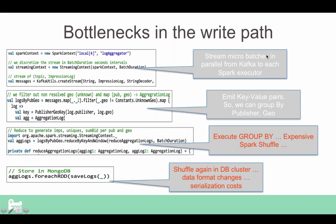What we're doing here is streaming micro-batches in parallel from Kafka to a bunch of Spark executors. The first thing is filtering out events that belong to unknown geography. Then you run through a mapper, and the mapper emits key-value pairs — the key being the publisher-geography combination, and the rest of the fields becoming the value. The reason for that structure is to enable the subsequent reduction step.